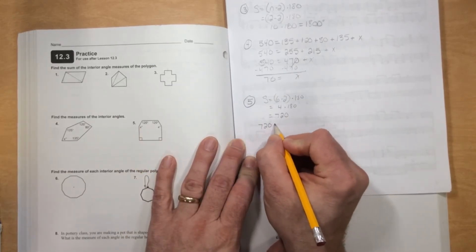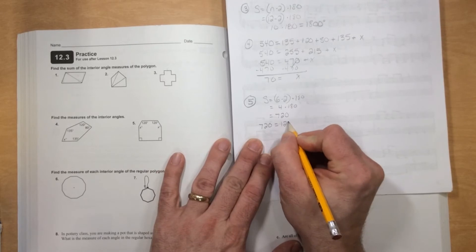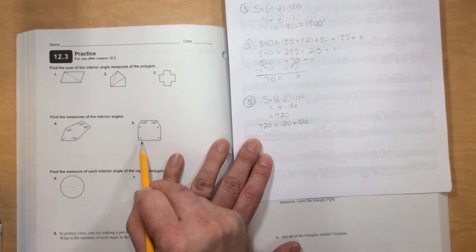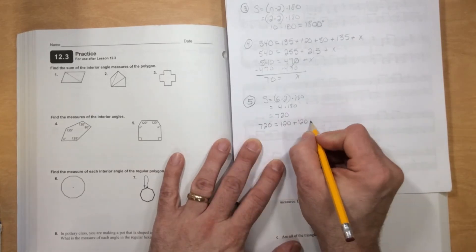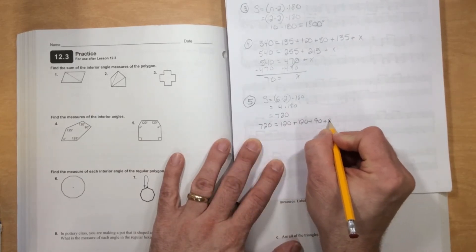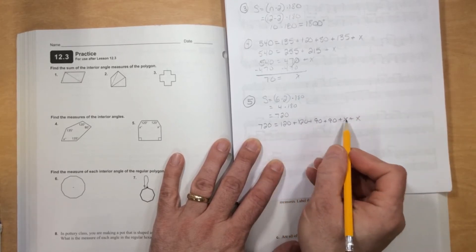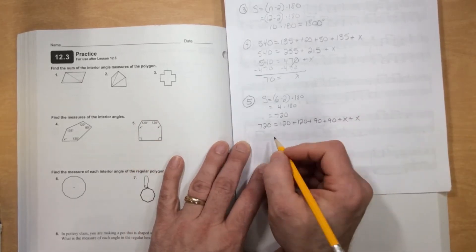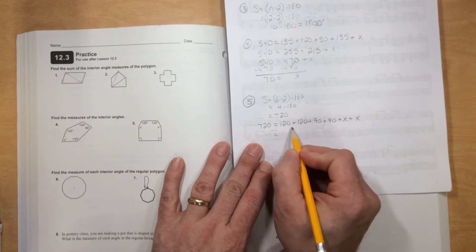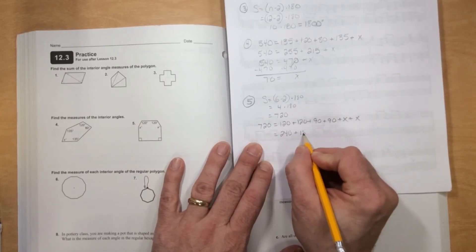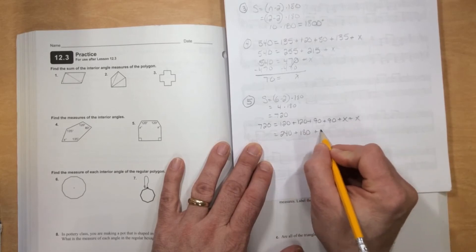So 720 equals 120 plus 120. Don't forget these perpendicular signs. Those are 90 degrees. So plus 90 plus 90 plus X plus X. I have all my angles there. And I'll combine these, that's 240. Combine these, that's 180. Combine these, that's 2X. This would be 420 plus 2X.